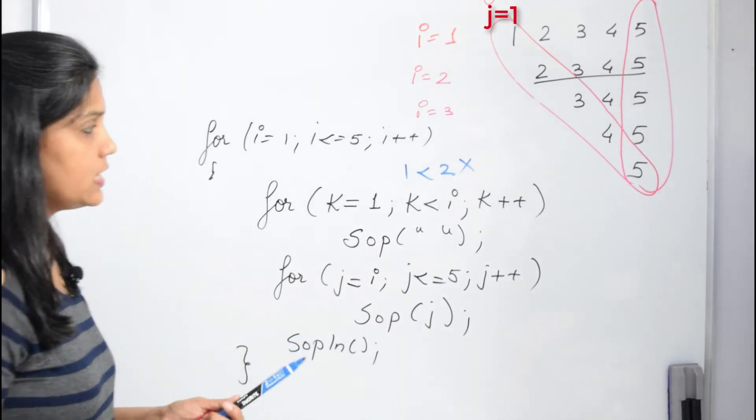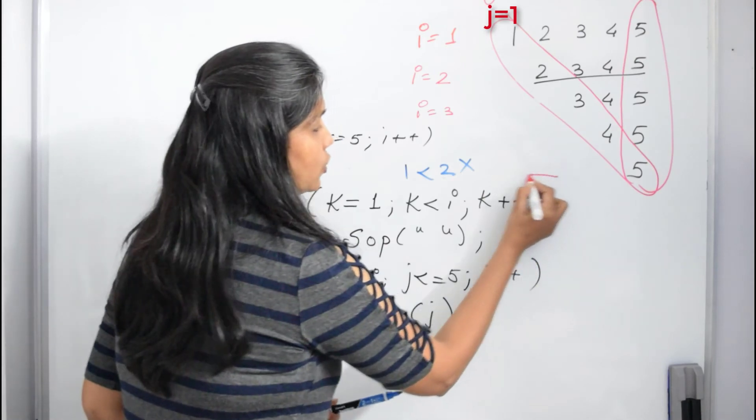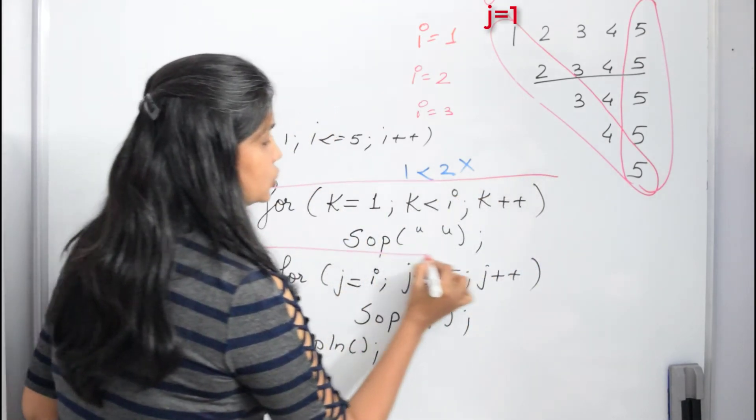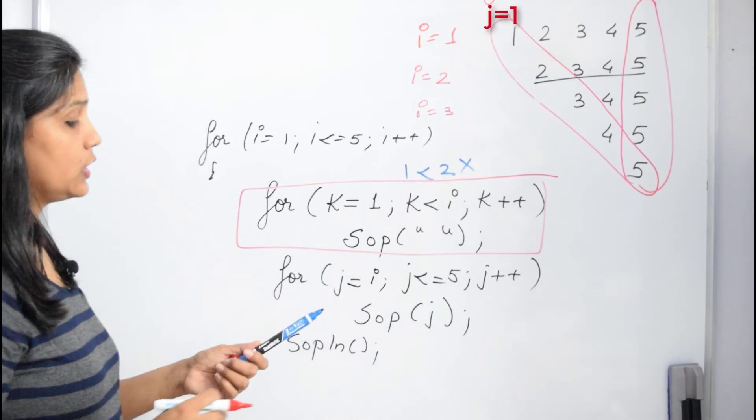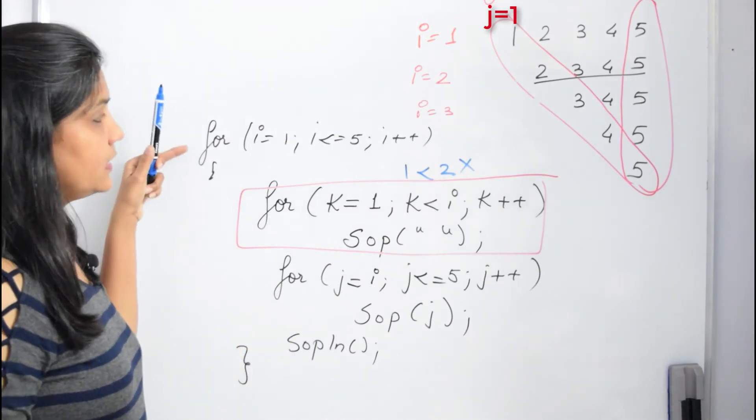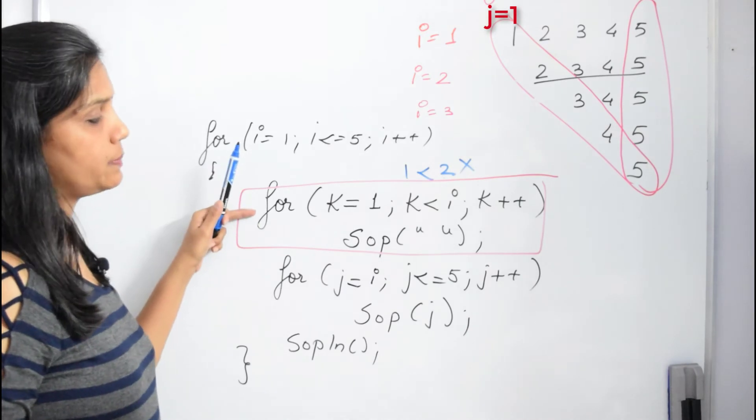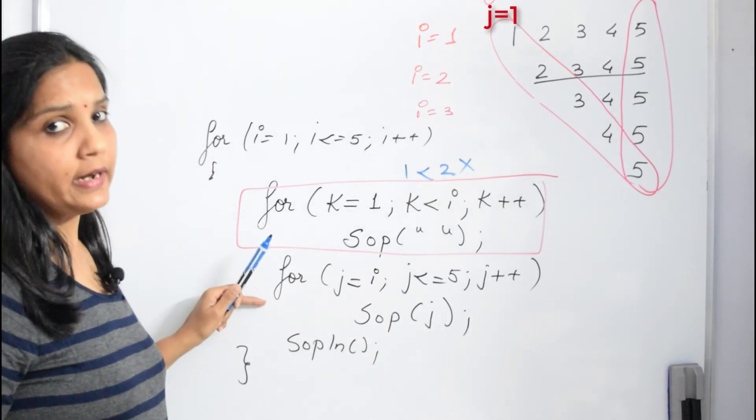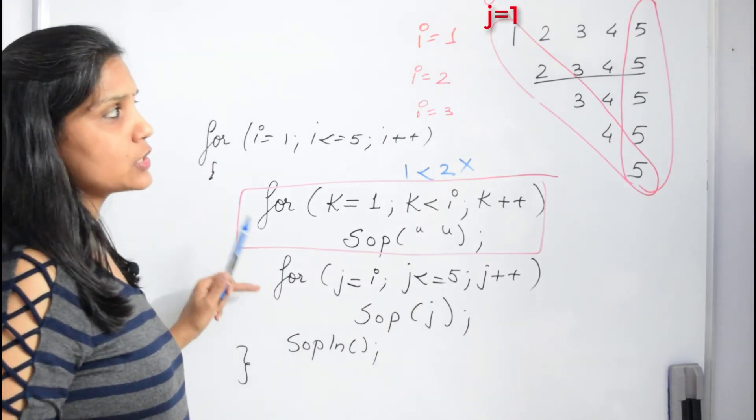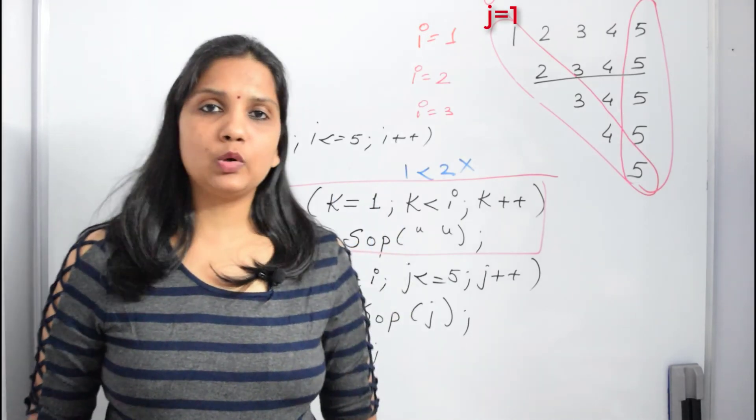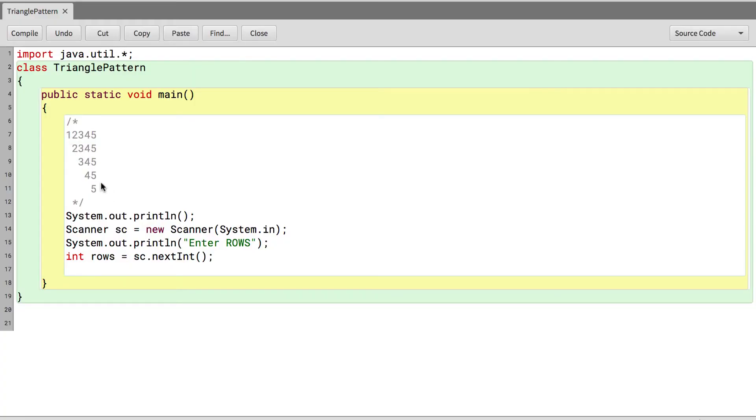So actually whenever you are working with spaces, you have to make sure that you write a loop that is actually printing spaces. So here you can see inside the outer loop we have two inner loops—one for spaces and one for printing the values. Let's go ahead and implement the same on BlueJ to print this pattern.